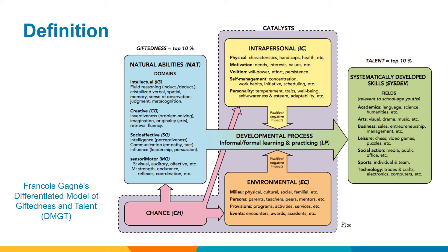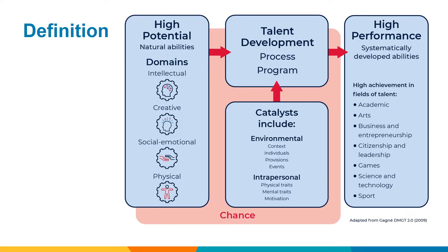Whether an individual's giftedness is ever displayed as a talent can be determined by the catalysts, as shown in the middle of the diagram. The same model, represented differently here, highlights how the shift from high potential to high performance occurs as a result of a talent development process. The PIAC program is designed to be an environmental catalyst, which, in addition, provides a learning environment that recognises the importance of the development of intrapersonal skills.